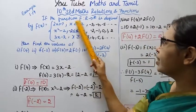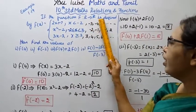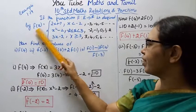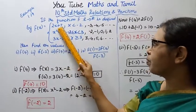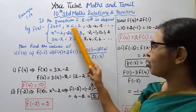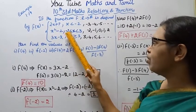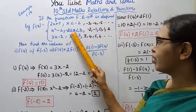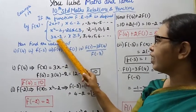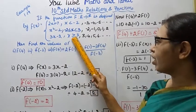If the function f from R to R is defined by f(x) equals 2x plus 7 when x is less than minus 2, x square minus 2 when minus 2 less than or equal to x less than 3, and 3x minus 2 when x is greater than or equal to 3.